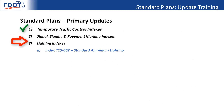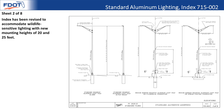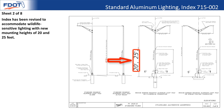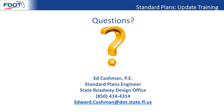The last topic is the lighting index, 715-002, standard aluminum lighting. The biggest change is that there are new mounting heights of 20 feet and 25 feet, meant to accommodate wildlife-sensitive lighting, which is considerably lower powered and may not meet lighting criteria with full-size mounting heights. The SBI has also been updated to provide guidance to use 8 or 10 foot poles or arms with those new 20 and 25 foot mounting heights. If you have any questions, please feel free to contact me.